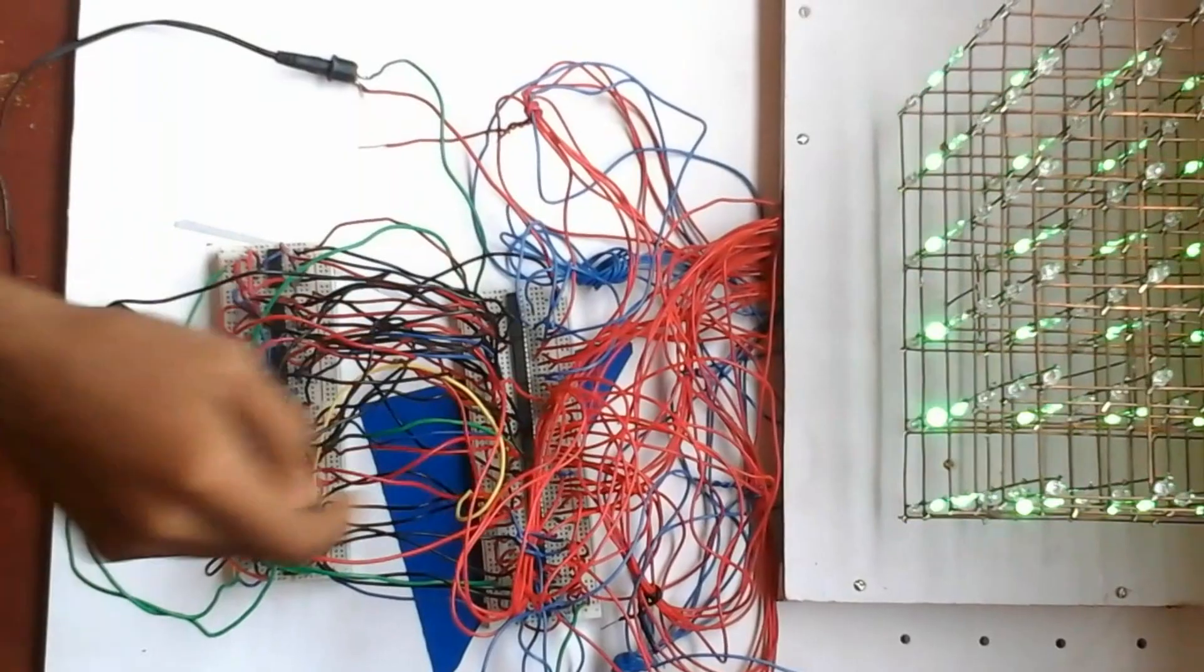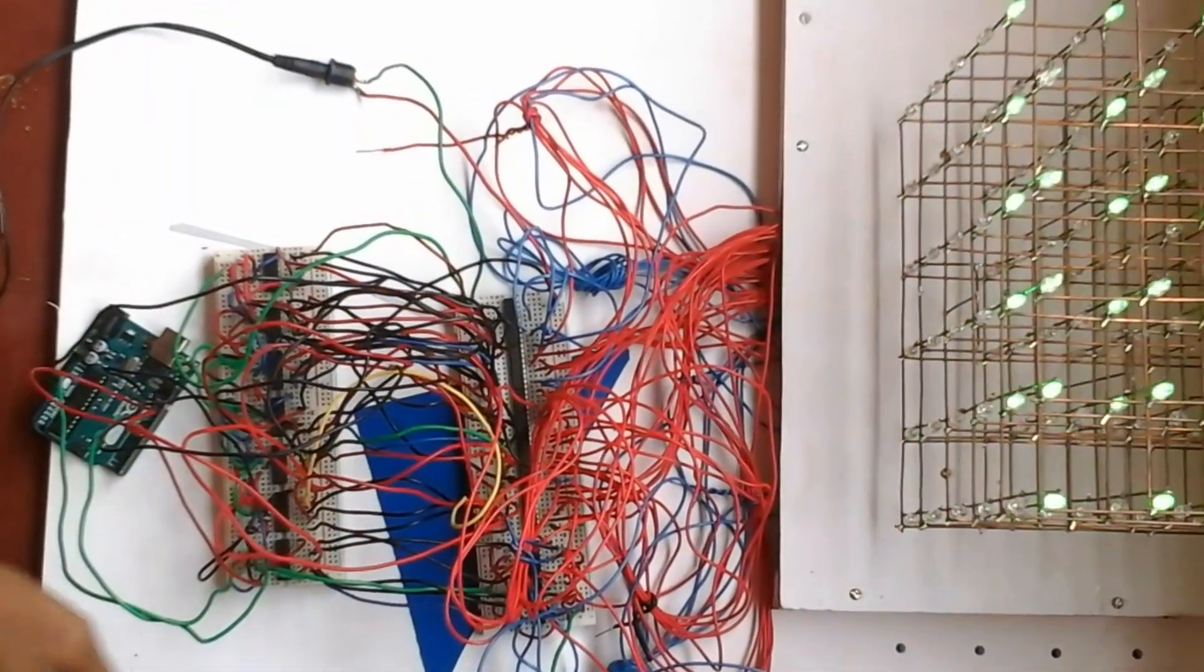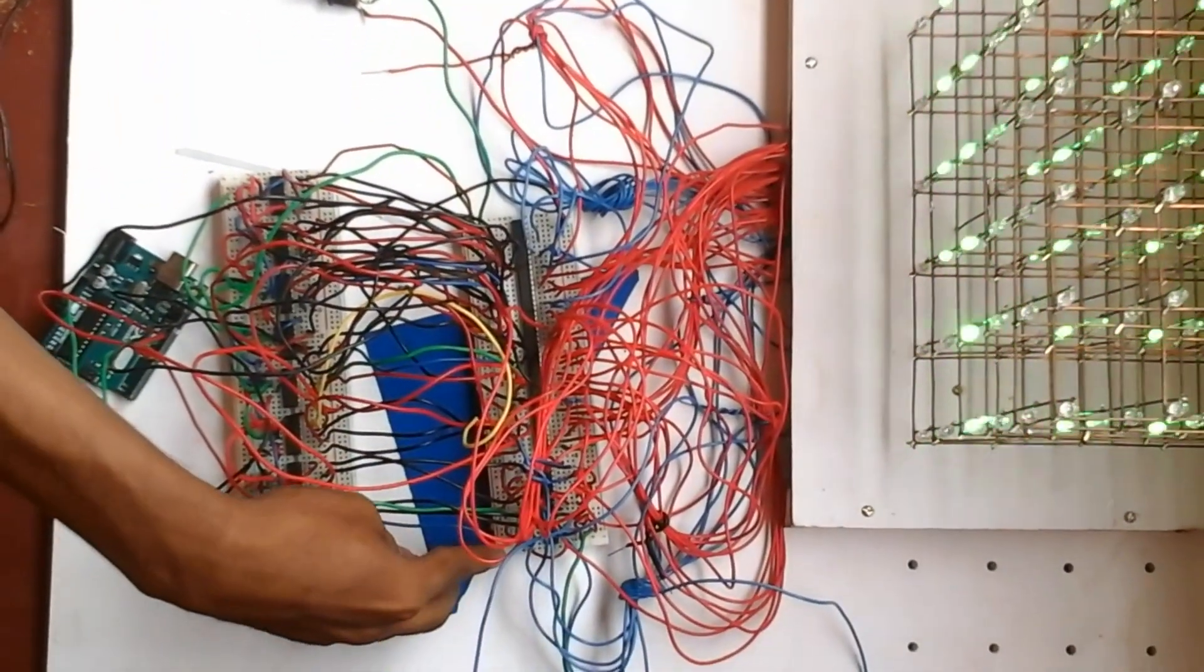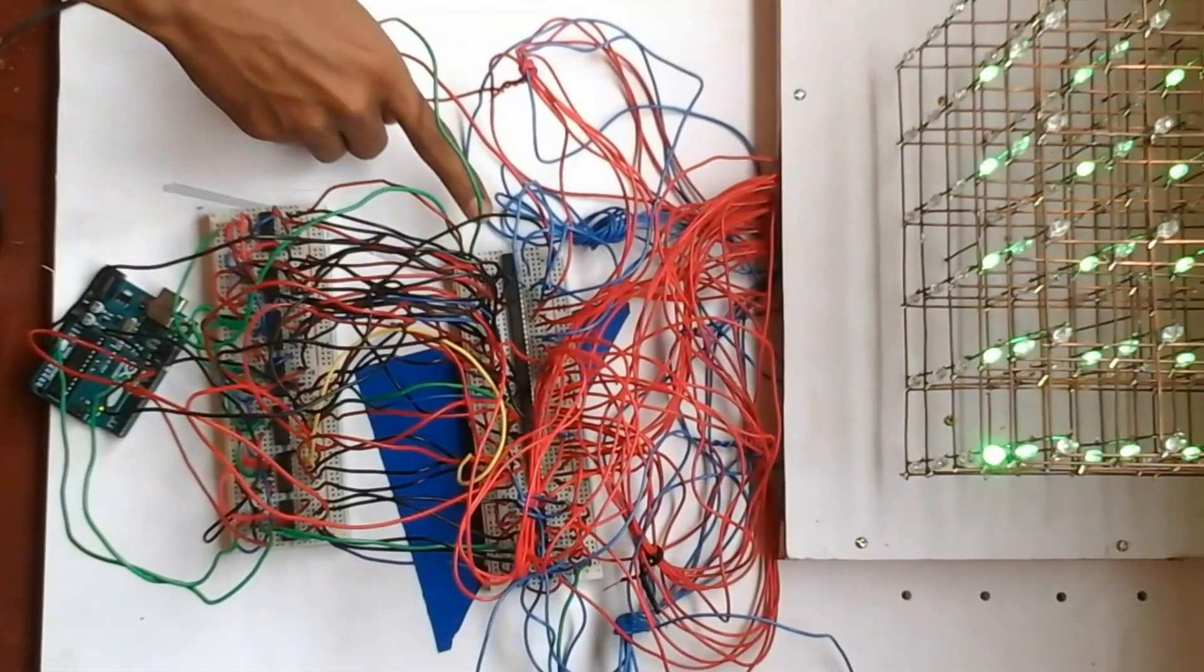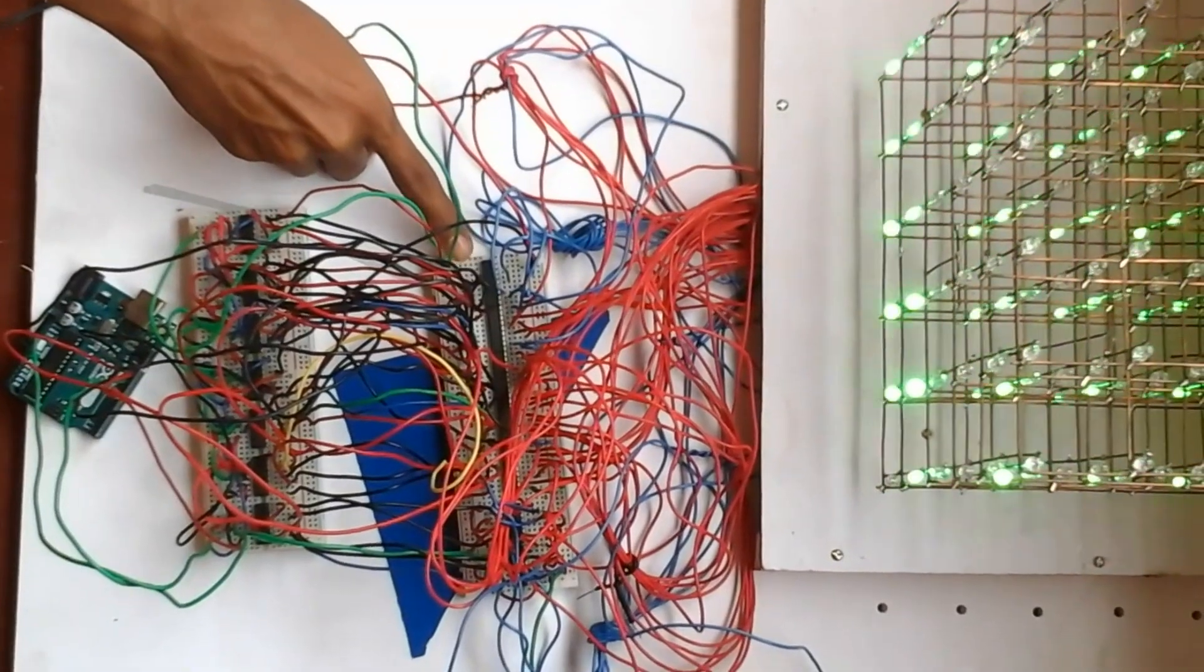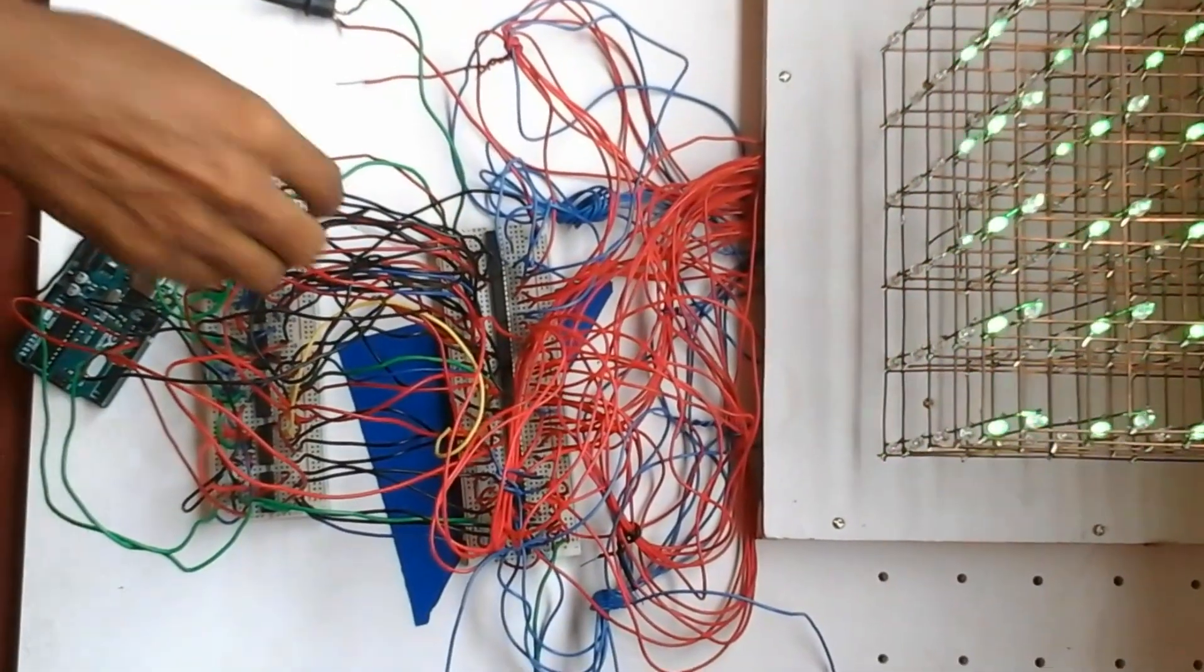36 cathode terminals are connected to 36 output pins of this group of ULN2803 ICs, and six anode terminals are connected to the output pins of these L293D ICs. The control pins to control output pins of ULN2803 ICs are supplied from the 74HC595 ICs.